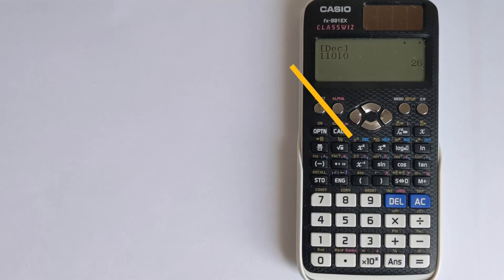So you now know how to convert between decimal and binary using your Casio ClassWiz calculator. If this was useful to you please like and subscribe below, and thank you very much for watching.